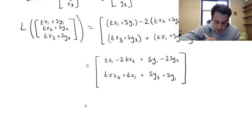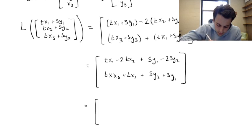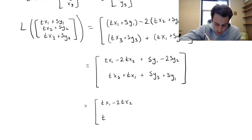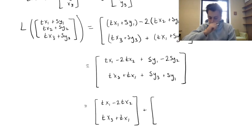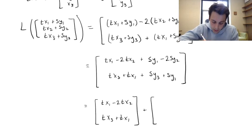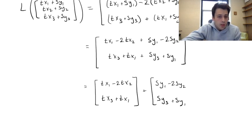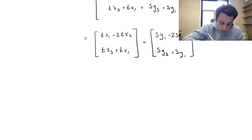Now let's write this as the addition of two vectors. The first vector has first coordinate tx1 minus 2tx2 and second coordinate tx3 plus tx1. The second vector has first coordinate sy1 minus 2sy2 and second coordinate sy3 plus sy1. We're just breaking things up and making it a little neater. We can factor out the t, since it's in every single term of the first vector.